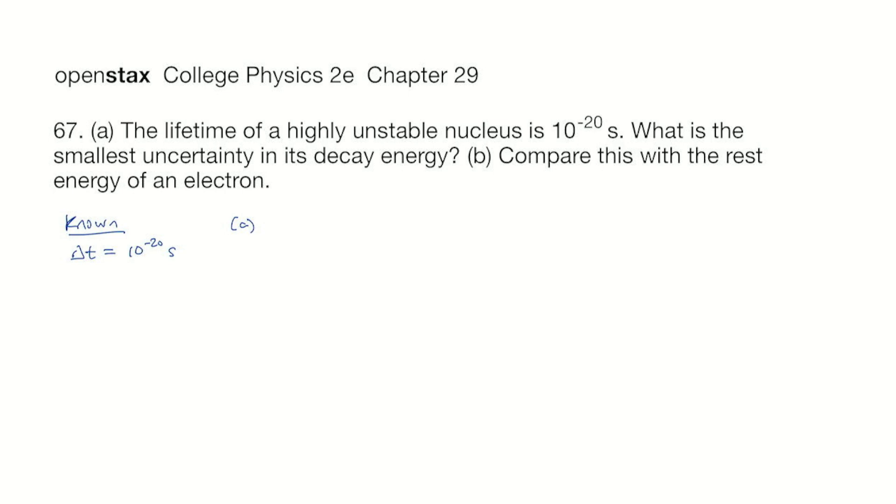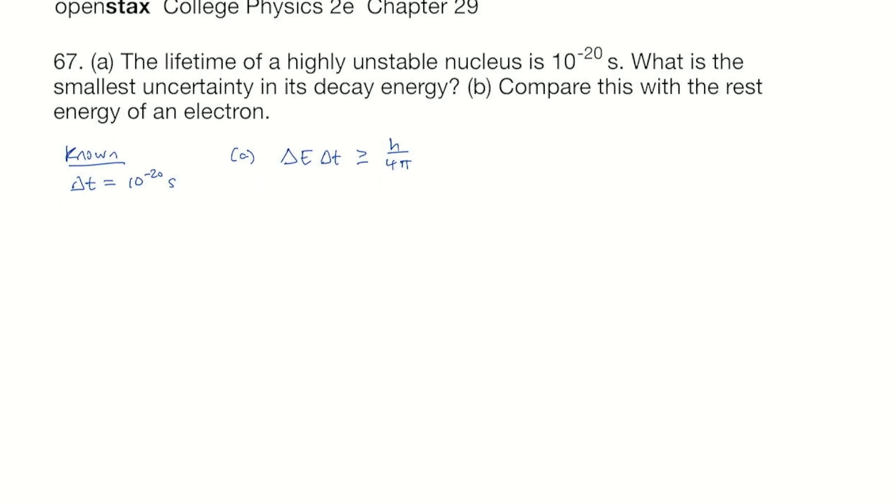In part A, we're going to be looking for delta E, and from the Heisenberg uncertainty principle for energy and time, we have delta E times delta T. These are the uncertainties in energy and time. We multiply those, and they are greater or equal to H over 4 pi. So that means delta E is greater than or equal to H over 4 pi delta T.